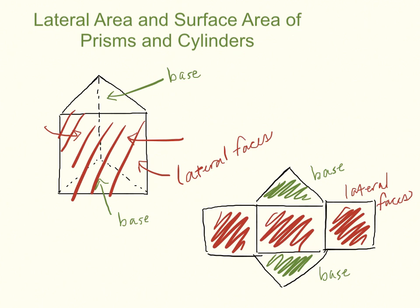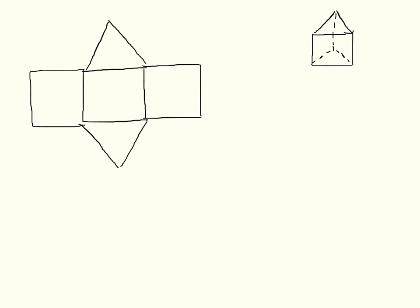Looking at the net of the prism, we'll have a better idea about how to come up with a formula to find the lateral area and the surface area. Here we have our prism and the laid-out net — our two bases and all three lateral faces. You'll notice that these lateral faces are rectangles, at least for a right prism, which is what this lesson is about.